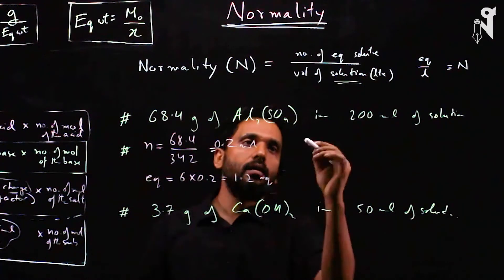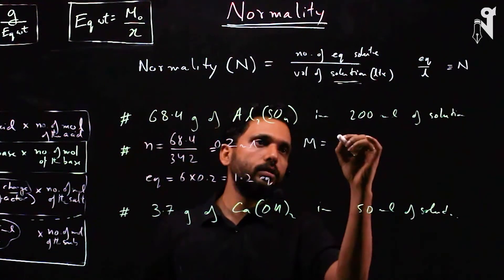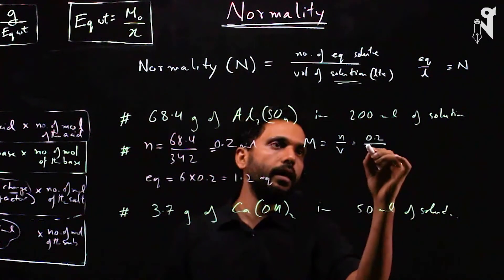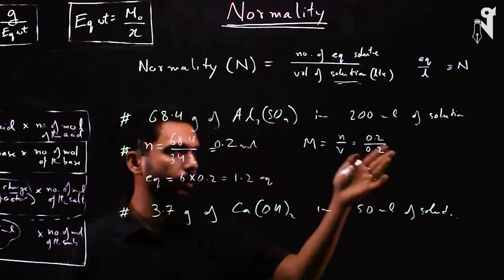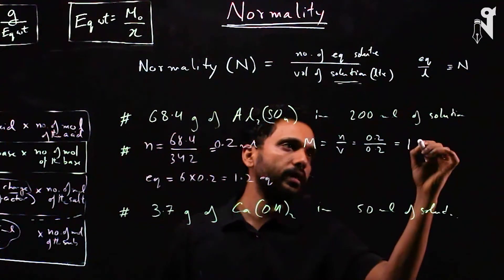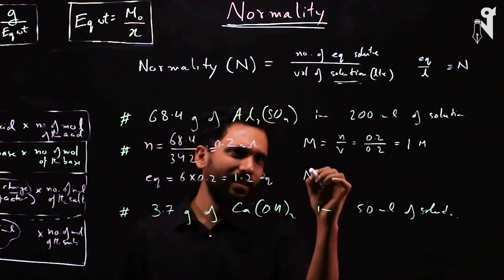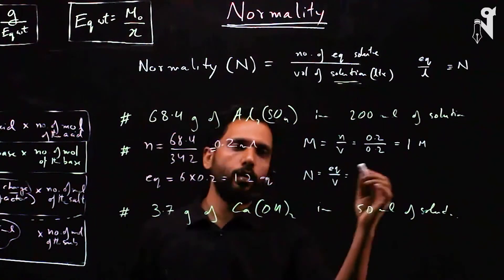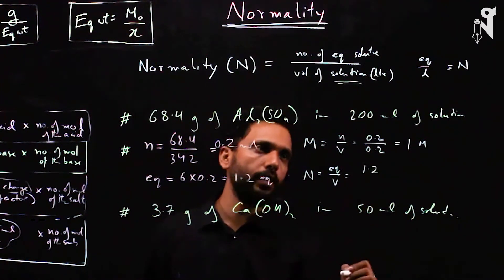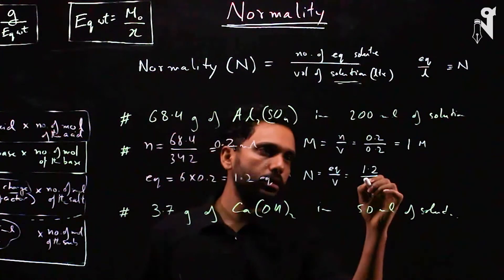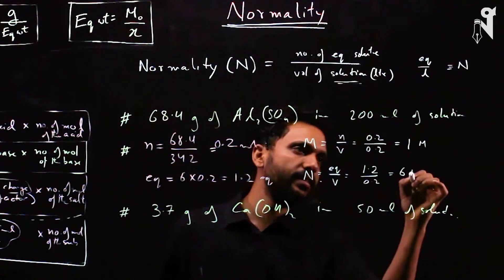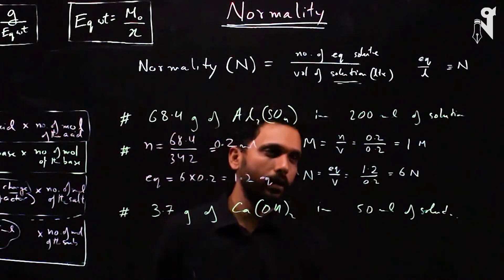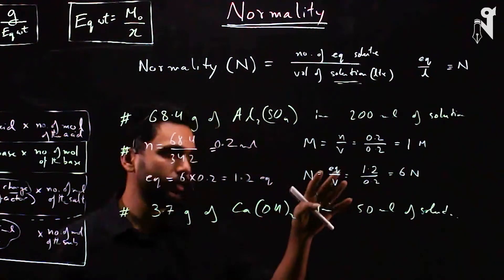Molarity = number of moles ÷ volume in liters = 0.2 ÷ 0.2 = 1 molar. Normality = number of equivalents ÷ volume = 1.2 ÷ 0.2 = 6 normal. So normality is 6 whereas molarity is 1, representing that this solution has 6 times the effect of a monovalent salt.